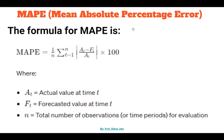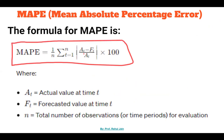Now let's go to the formula. The formula for mean absolute percentage error is: the difference of actual value and forecasted value, divided by the actual value, multiplied by 100, then averaged over all observations. Here A_t is the actual value at time t, F_t is the forecasted value at time t, and n is the total number of observations.